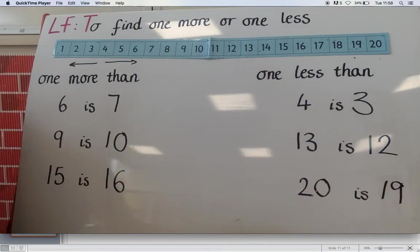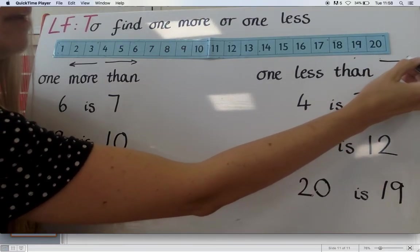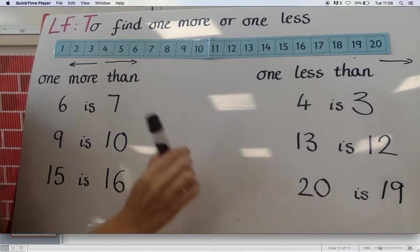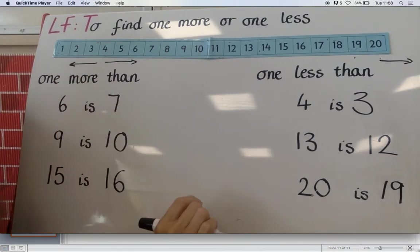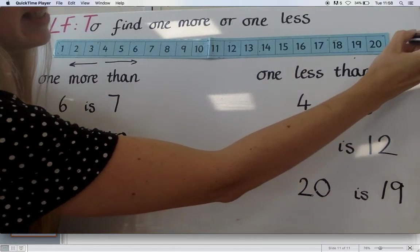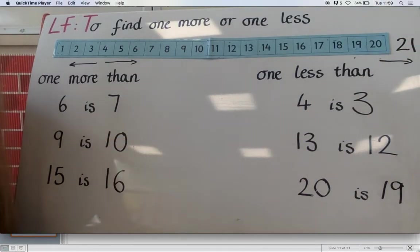Can anybody tell me what one more than twenty would be? What would be the next number on our number line if this continued? What would be one more than twenty? That's right. Twenty-one. Well done.